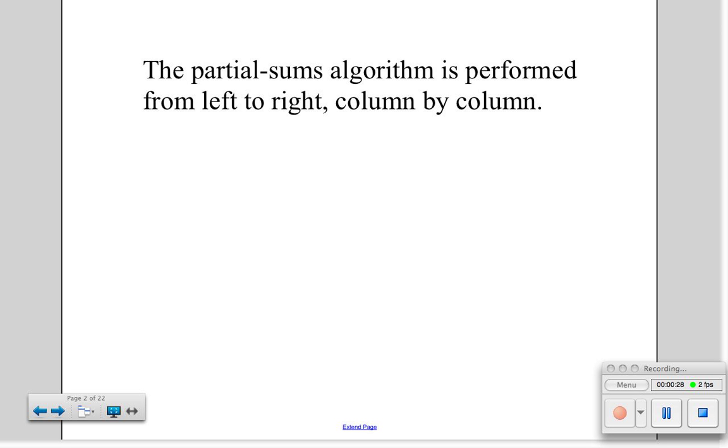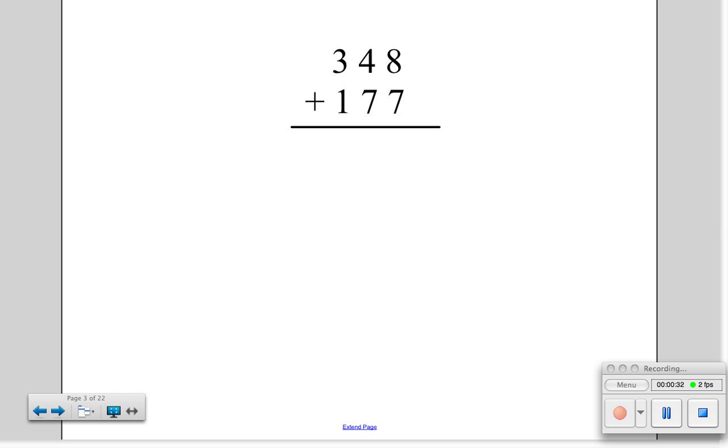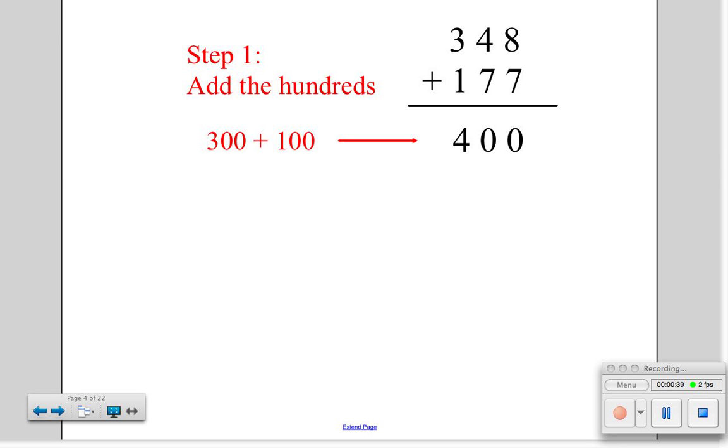The partial sums algorithm is performed from left to right, column by column. So we'll try out adding 348 plus 177. Step 1 is to add the hundreds. That is our first column on the left. 300 plus 100 equals 400.